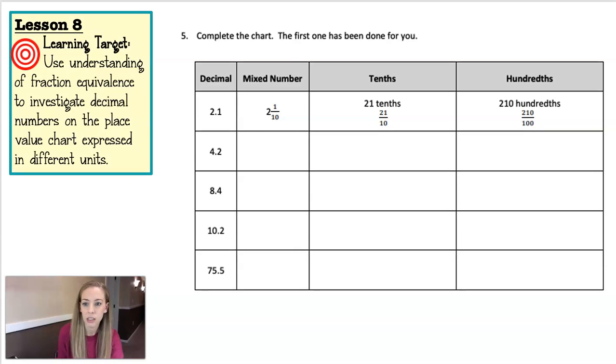So lesson 8 is all about using understanding of fraction equivalents to investigate decimal numbers on the place value chart expressed in different units. They're going to take this amount as a decimal, start it as a mixed number, and then how many tenths would that be and how many hundredths would that be. And it sounds confusing but if you just think of money, it becomes pretty simple.